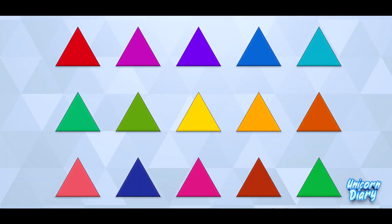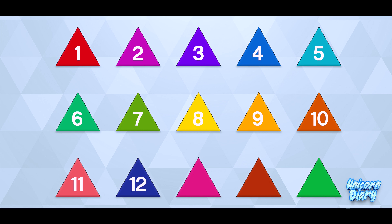Now we are going to count how many triangles are here. Right now you can see there are so many triangles. Let's count with me: 1, 2, 3, 4, 5, 6, 7, 8, 9, 10, 11, 12, 13, 14, 15. Then how many triangles are here? There are 15 triangles.